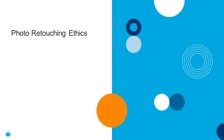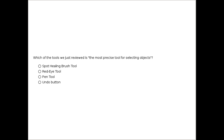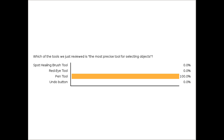We just want to see how much people are paying attention to what they've learned. Which of the tools we just reviewed is the most precise tool for selecting objects? Go ahead and click on your screen. We'll also take a question while you respond to the live poll. Wes, we had a question asking: what's the benefit of using the pen tool to select as opposed to using the magnetic lasso?